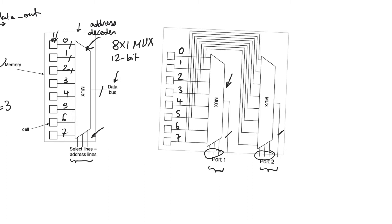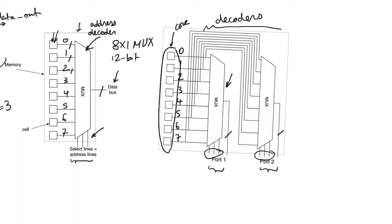The number of ports indicates the number of address decoders present and the number of memory locations that can be independently accessed for reading or writing. In a read-write memory, you could have multiple ports where some are read-only, write-only, or read-write, as long as there is an independent address decoder for each port. The memory core consists of the storage elements, and the rest of the circuitry shown here consists of decoders.